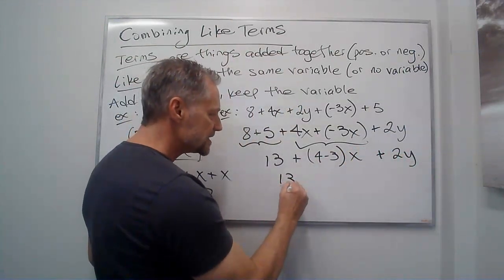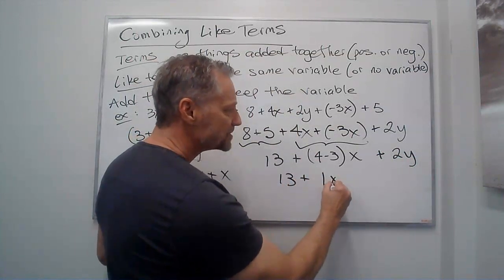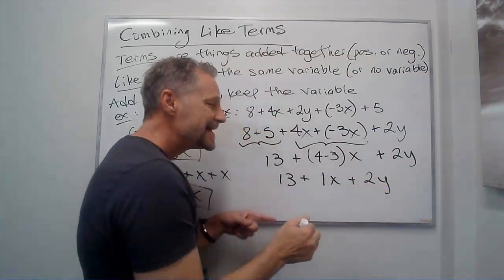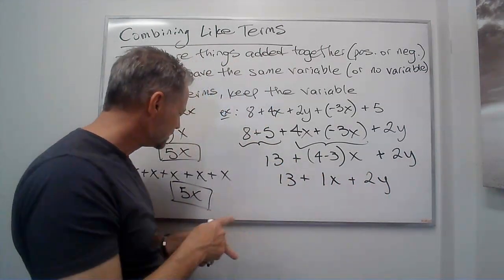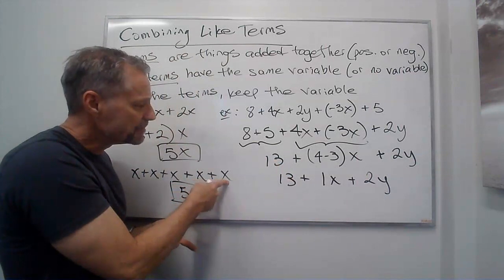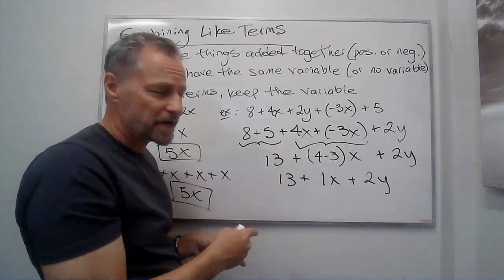So I've got 13 plus 1x plus 2y. None of those are like terms. Usually we don't say 1x. If we just have an x, like this x right here I have one of them. So I usually don't put the 1 in front.